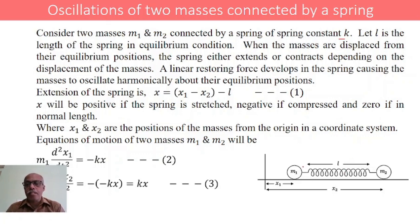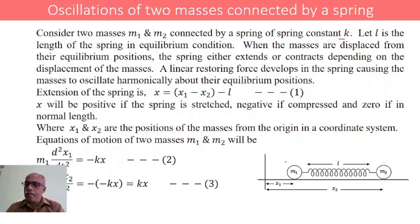When the masses are displaced from the equilibrium position, the spring will either expand or contract depending upon the direction of displacement of the masses. When m1 and m2 are displaced from their mean positions, a restoring force will be developed in the spring, due to which the masses will always try to return to their mean positions.